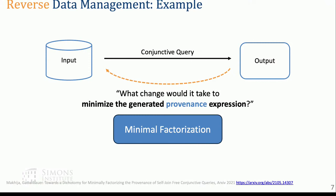We've seen that we can use a provenance semiring to compute a provenance polynomial when running a query. Now, if I look at this provenance expression and want to find a minimum equivalent version — a smaller formula — it turns out you can compute it using different query plans to get the minimum possible version. This can also be modeled as a reverse data management problem.